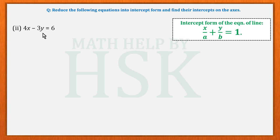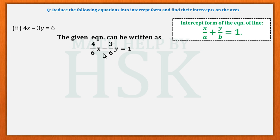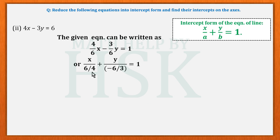For the second equation, a constant term is already on the right-hand side, so one step is already done. We just need to cross-multiply 6 to the left-hand side. The equation becomes 4/6 · x − 3/6 · y = 1.